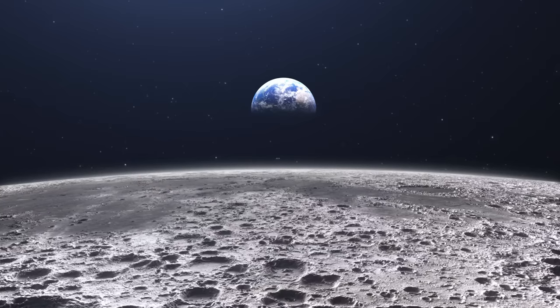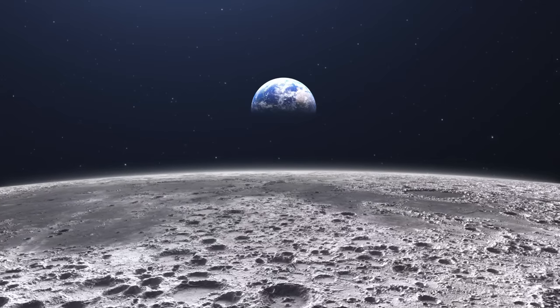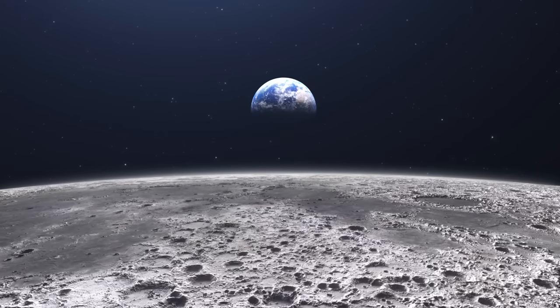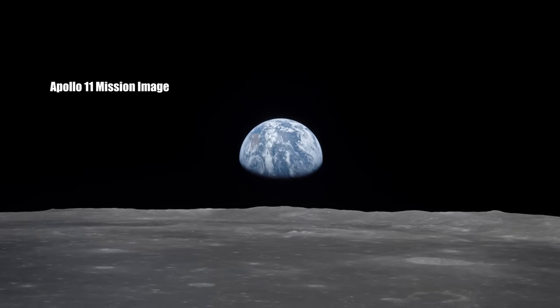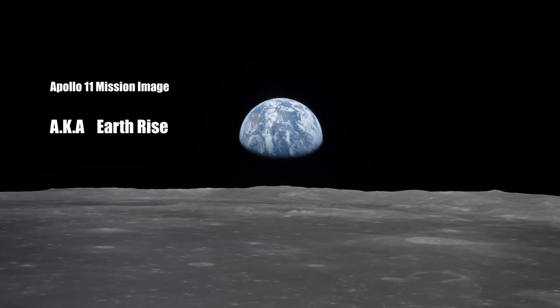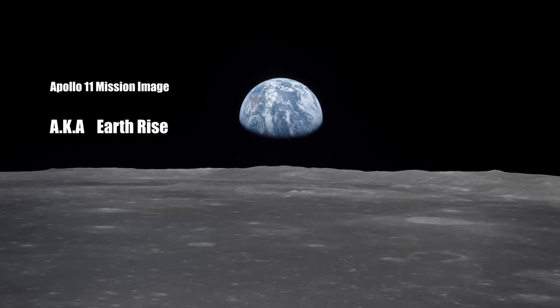And from this lunar vantage point, Earth appears as a fragile sphere of blues and greens, cradled in the black void of space, a sight that puts our existence into a humbling perspective. This is Earth as seen from the moon.